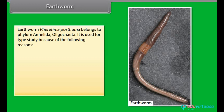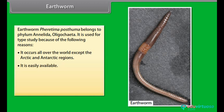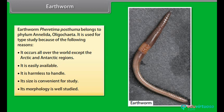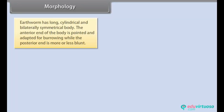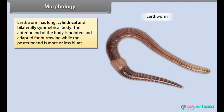It is used for type study because of the following reasons: it occurs all over the world except the Arctic and Antarctic regions, it is easily available, it is harmless to handle, its size is convenient for study, and its morphology is well studied. Earthworm has a long, cylindrical and bilaterally symmetrical body. The anterior end of the body is pointed and adapted for burrowing, while the posterior end is more or less blunt.